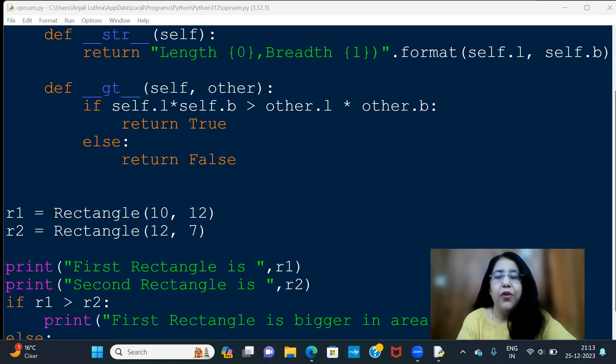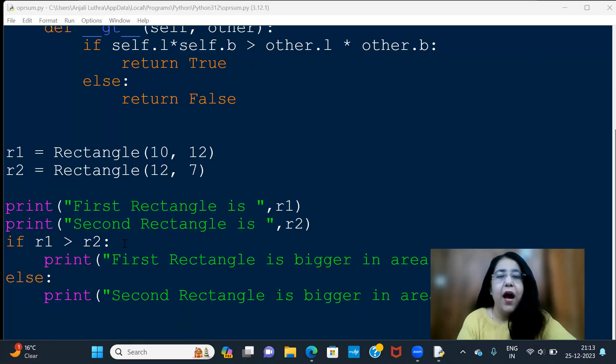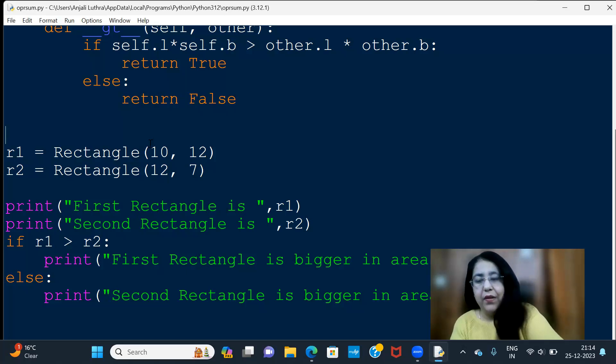So here we have made two objects, first rectangle, second rectangle. I have printed both rectangles, and then I have checked that if R1 greater than R2, if it is bigger than R2, then it will return.